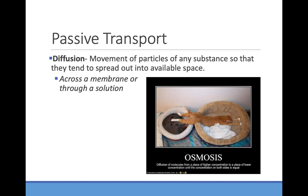So if you have a drop of some sort of dye in a beaker of water and you put it on top, eventually it's going to flow and spread out. This is diffusion. You can also have that movement across a membrane, which is what we are talking about here in this chapter.